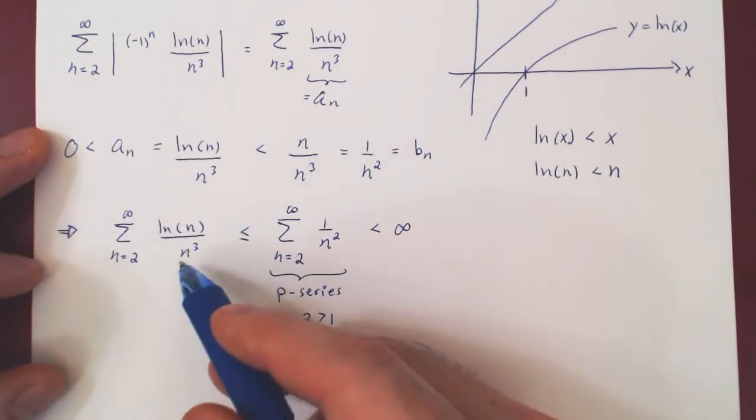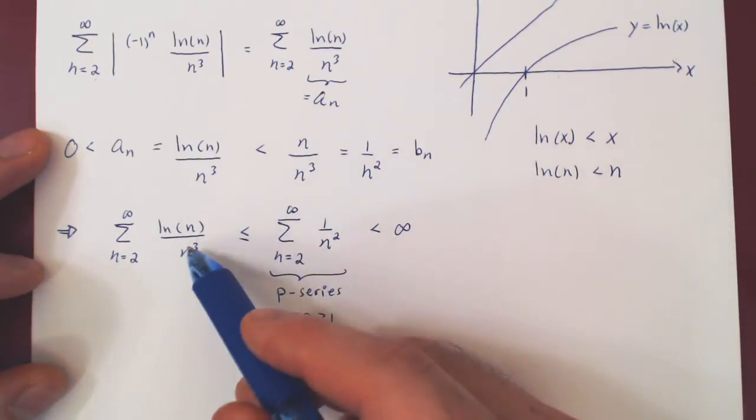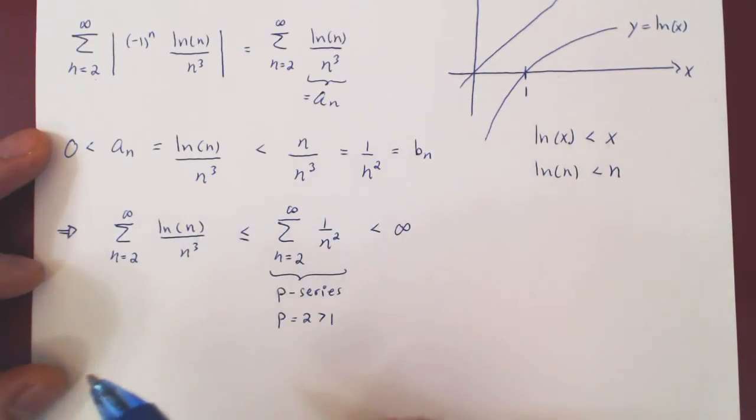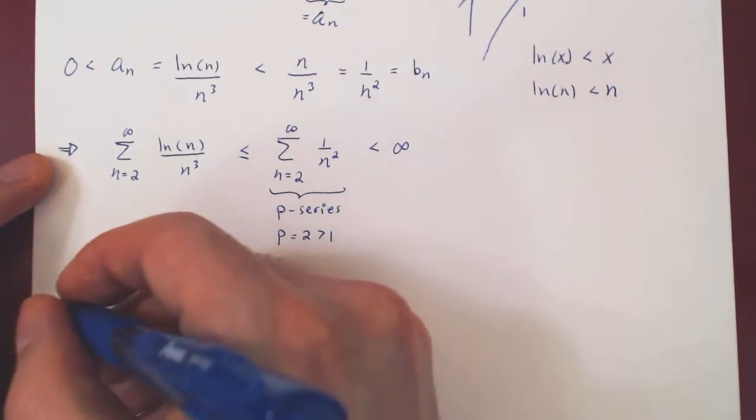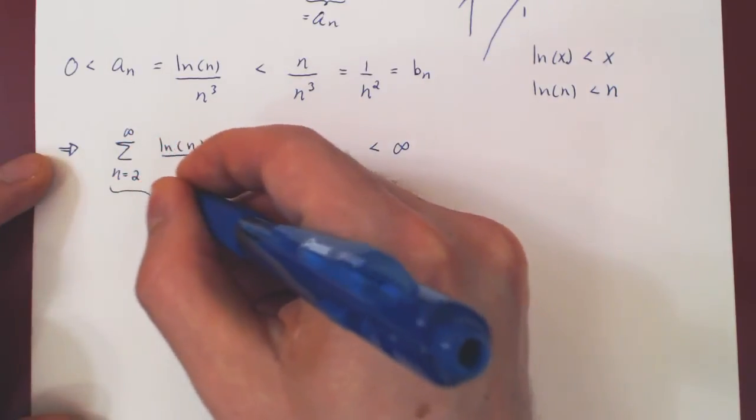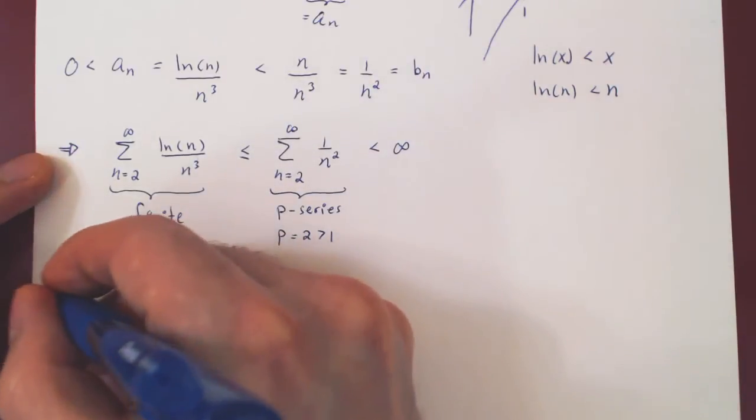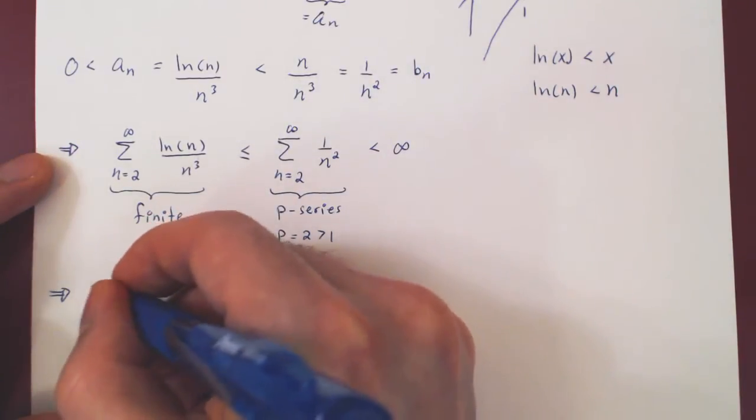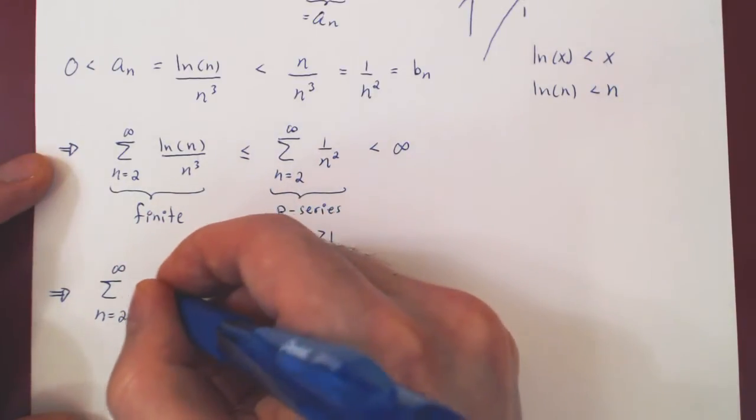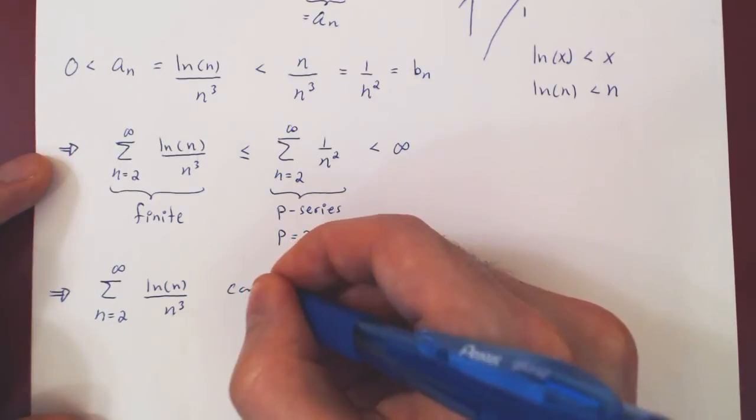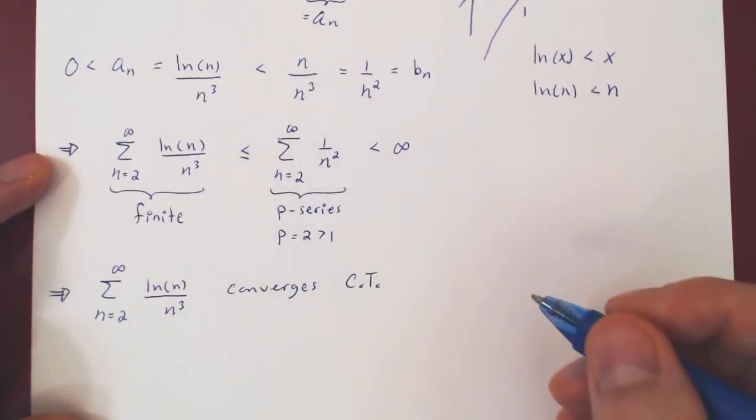And so if you look at the initial series, we have a series of positive terms that is finite, therefore the series converges by the comparison test. And, of course, the comparison test, c-t.